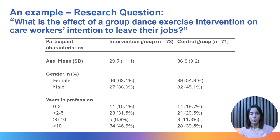Let's make an example. You are reading a paper where the research question is: what is the effect of a group dance exercise intervention on care workers' intention to leave their jobs? First, it's important to go and check what the sample looks like at baseline — it is worth looking at what our participants look like according to their allocation group. This is often table one in a quantitative paper. Note that tables tend to be longer in a paper, with more baseline characteristics reported, but for brevity I have only reported three variables, each summarizing a different type of data.